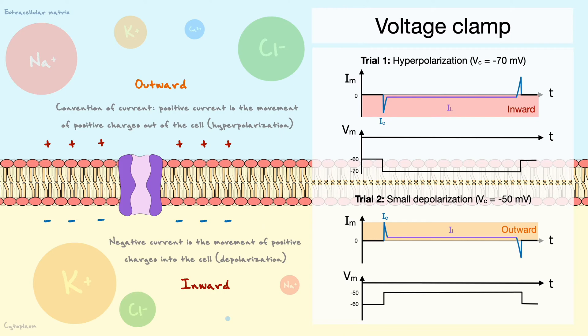In this second example, it is the opposite logic. The cell becomes more positive, but wants to be more negative. Thus, it will produce an outward current to hyperpolarize the cell.